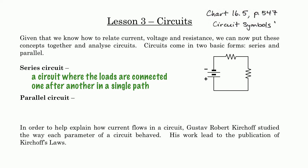There is a chart in your textbook on page 547, chart number 16.5 — they're all the circuit symbols. When you look at that, you will see that this symbol right here is, of course, a cell or a battery, and this kind of zigzag line right here is a resistor. There are also symbols for motors, light bulbs, etc.